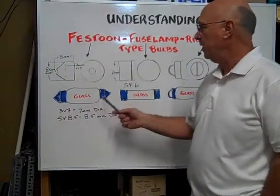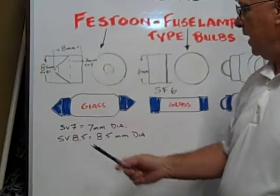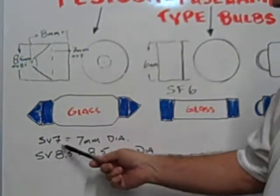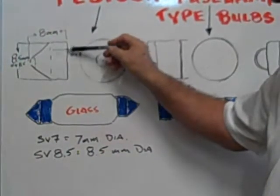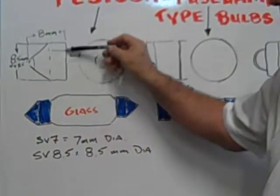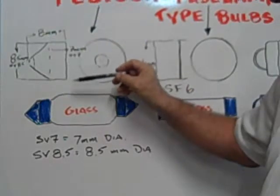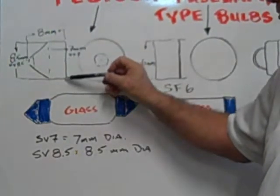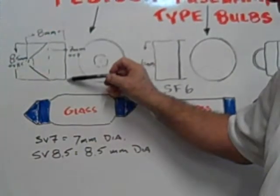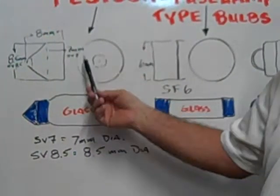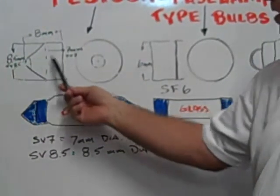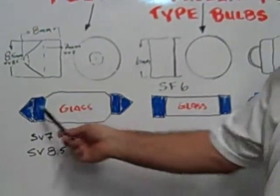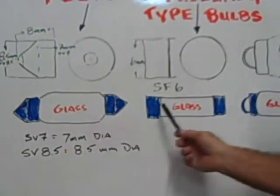The Festoon bulb has a pointed end and comes in two sizes diameter-wise. The SV7 is 7 millimeters in diameter across the base. The SV8.5 is 8.5 millimeters across the entire diameter. Both end caps are 8 millimeters in length, and there's a glass tube in the center of the two ends.